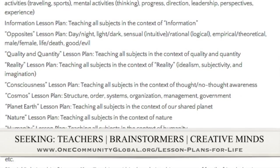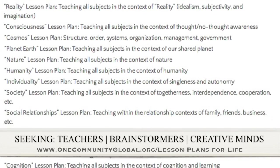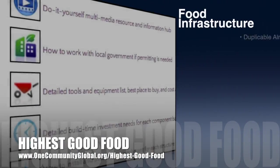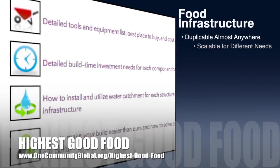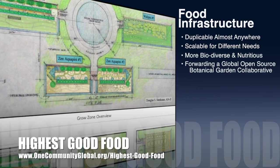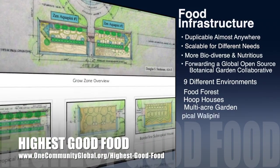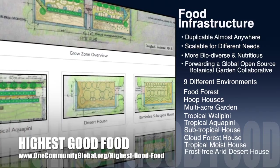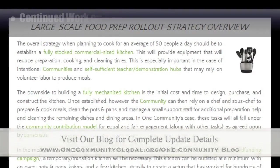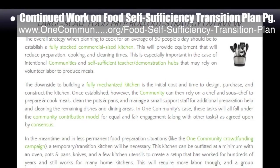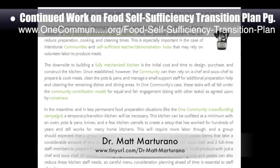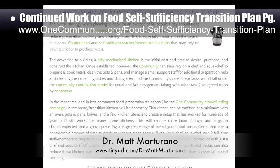One Community's approach to highest good food is duplicable almost anywhere, scalable for different needs, more biodiverse and nutritious, part of forwarding a global open-source botanical garden collaborative, and includes nine different free-shared and duplicable growing environments. This week, the core team working on highest good food completed another round of organizing the streamlined version of our food self-sufficiency transition plan page, which includes contributions provided by naturopathic doctor Matt Martirano, creator of the coherent model for comprehensive digestive health.